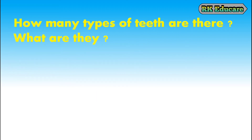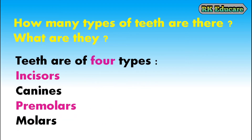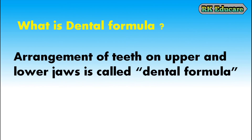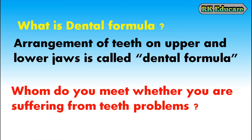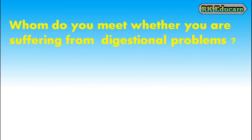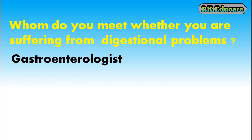How many types of teeth are there? There are four kinds of teeth in our mouth: incisors, canines, premolars and molars. What is the dental formula? Arrangement of teeth on the upper and lower jaw is called the dental formula. Whom do you meet when suffering from teeth problems? We will meet a dentist. Whom do you meet when suffering from digestive problems? We have to meet a gastroenterologist.